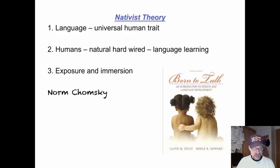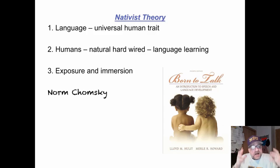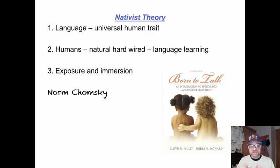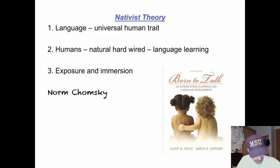The fourth one, the most interesting, is the nativist theory: that language learning is a universal human trait. All humans learn to speak, and all language shares these basic natural structures. All humans are naturally hardwired to learn language. Noam Chomsky called this a language acquisition device, LAD. In our brains, this natural hardwiring — when we are exposed to language — triggers this language acquisition device. We are genetically predisposed to learn language through exposure and immersion.